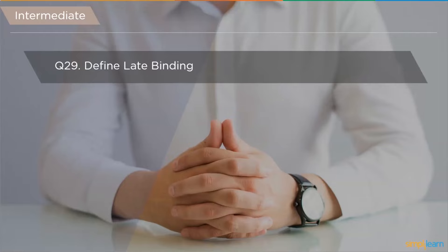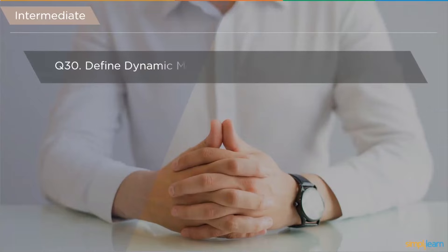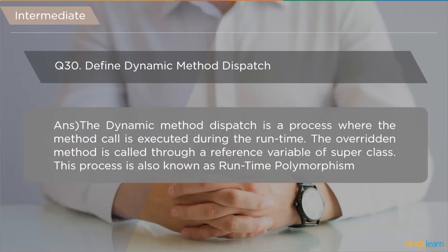The next question is: define late binding. Binding is a process of unifying the method call with the method's code segment. Late binding happens when the method's code segment is unknown until the method is called during runtime. Related to this, dynamic method dispatch is a process where a method call is executed during runtime — the overridden method is called through a reference variable of the superclass, which is called runtime polymorphism.